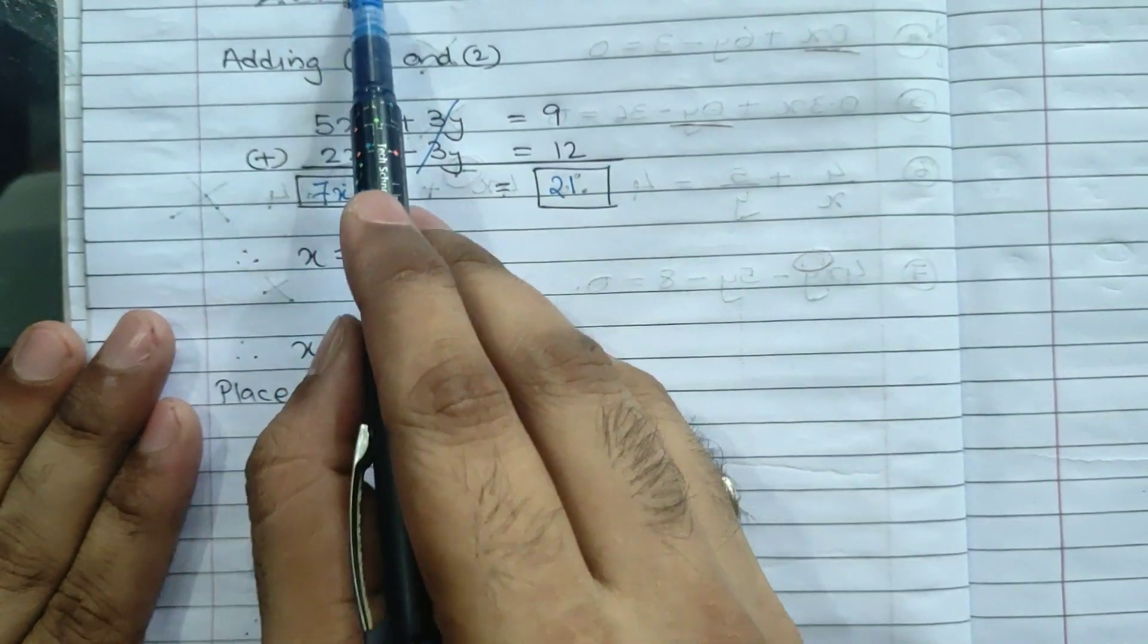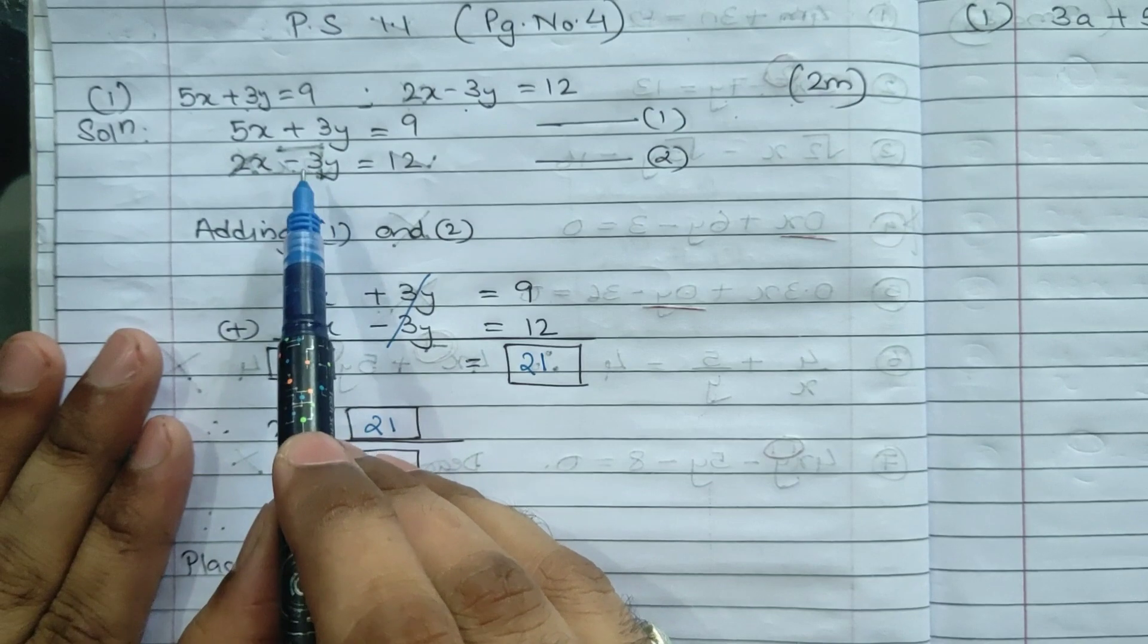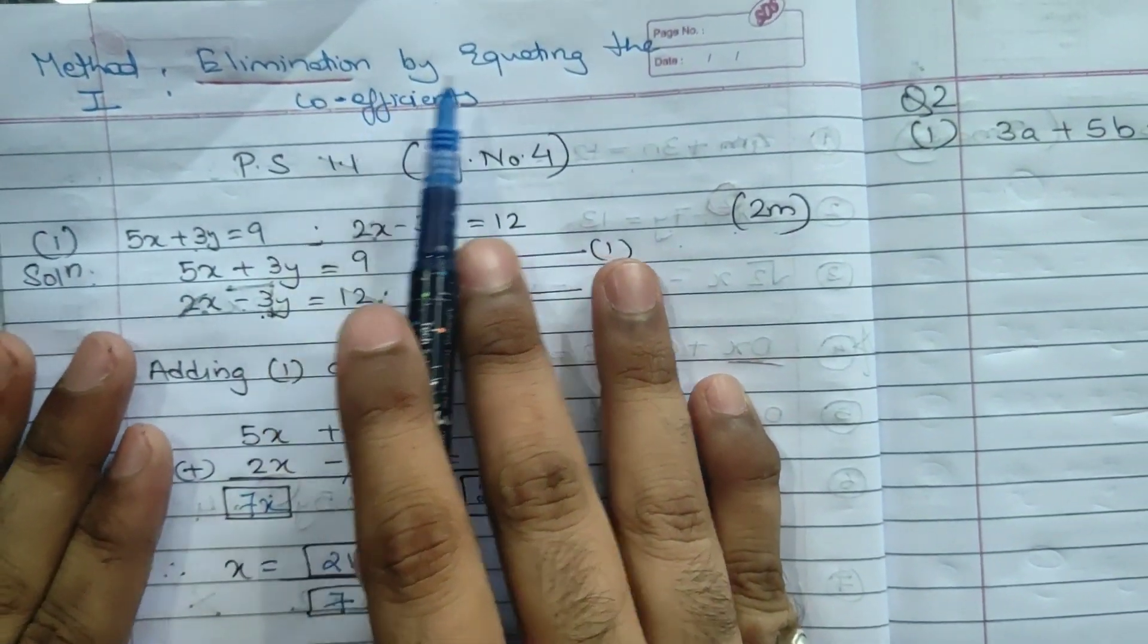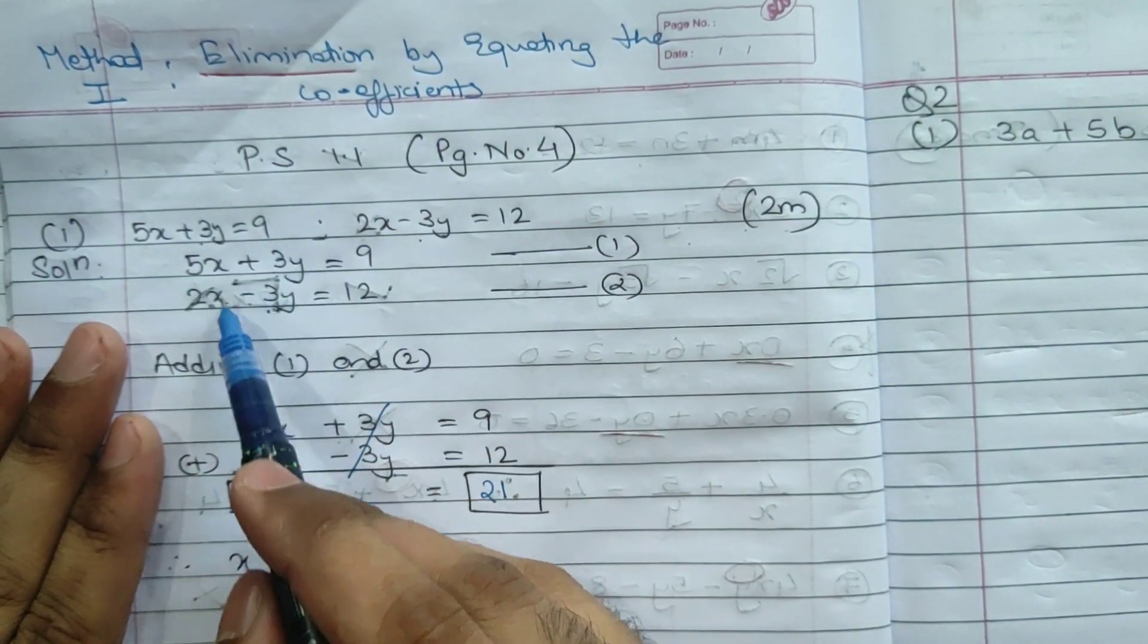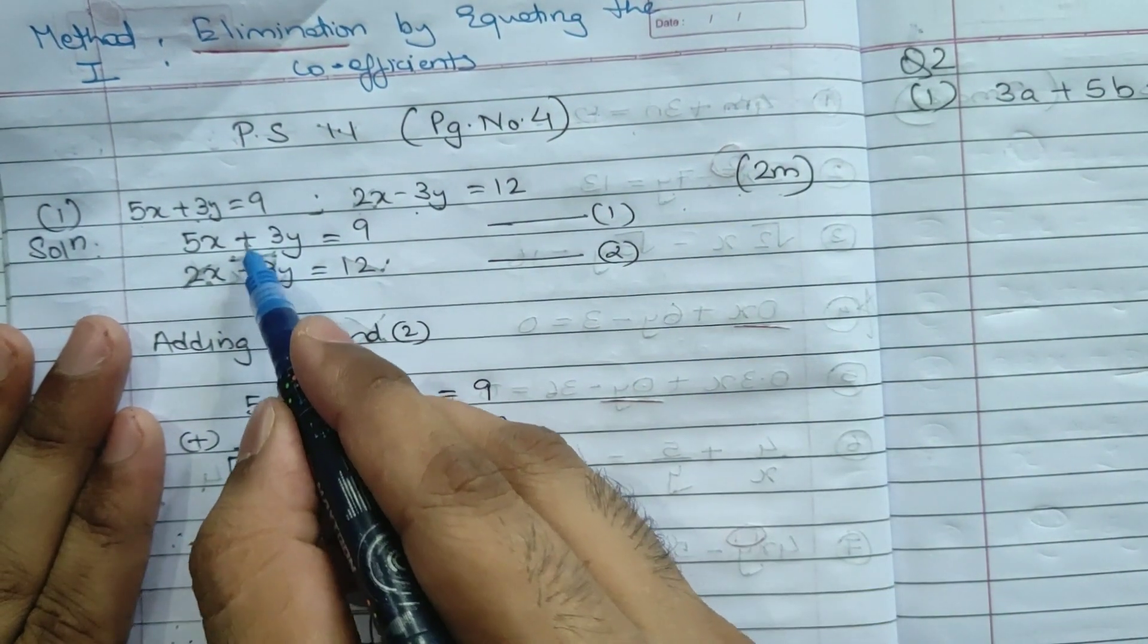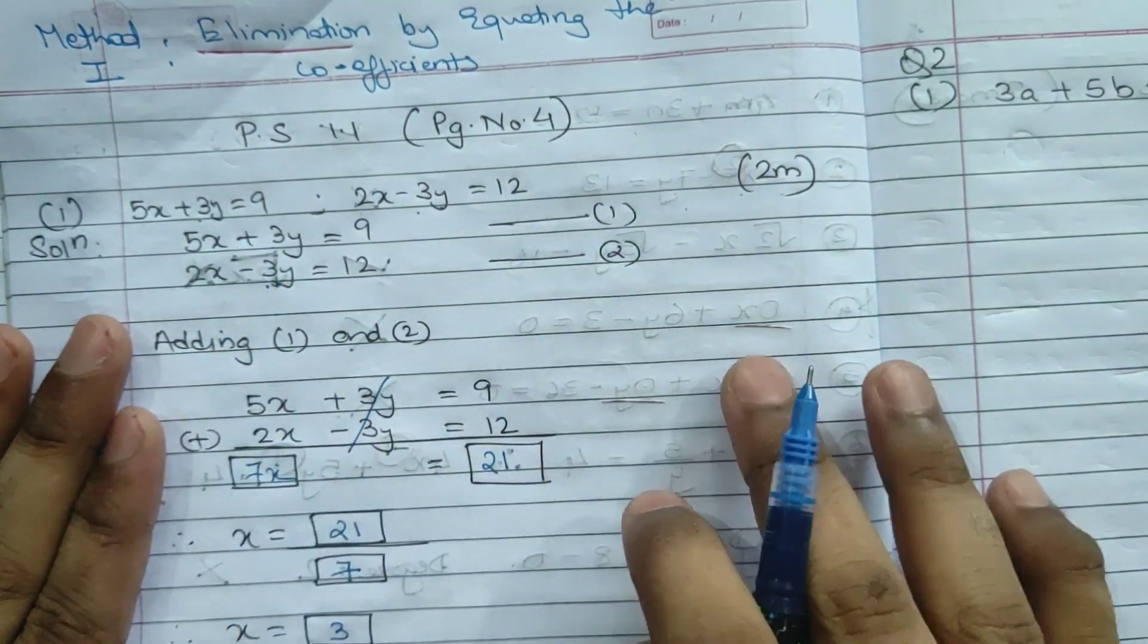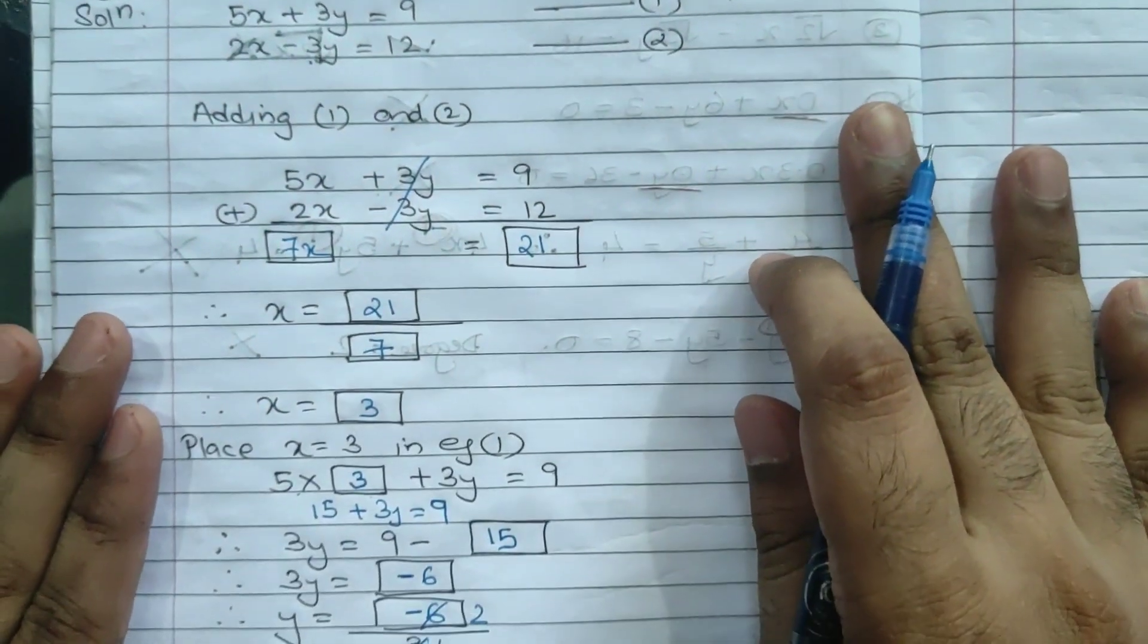I hope you understand. Here we had to eliminate y because the coefficients are the same. Elimination by equating the coefficient means which is the same. If the sign is different, then you will add it. If the sign is the same, then you will subtract it.